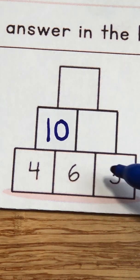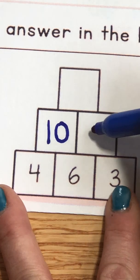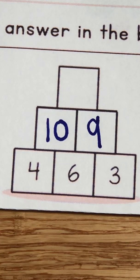Now let's take a look here. What is six plus three? Six, seven, eight, nine. That's right, nine.